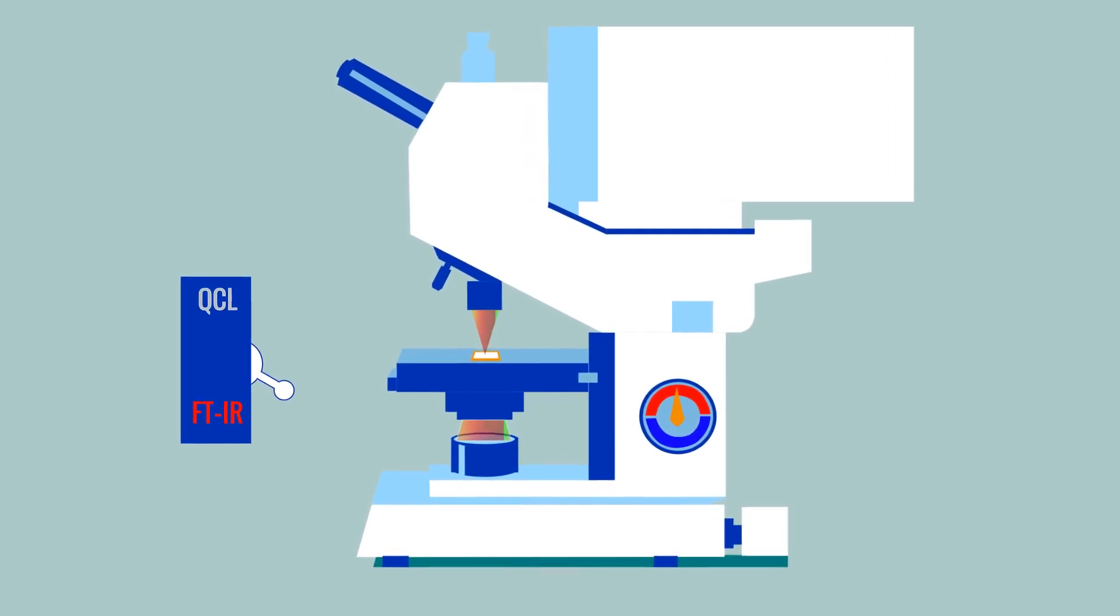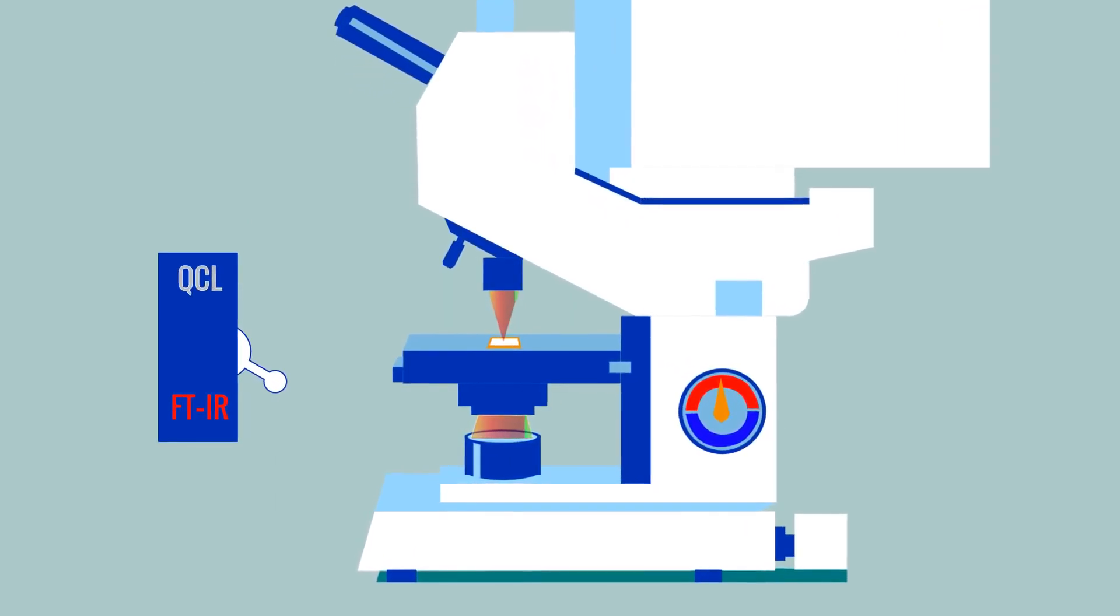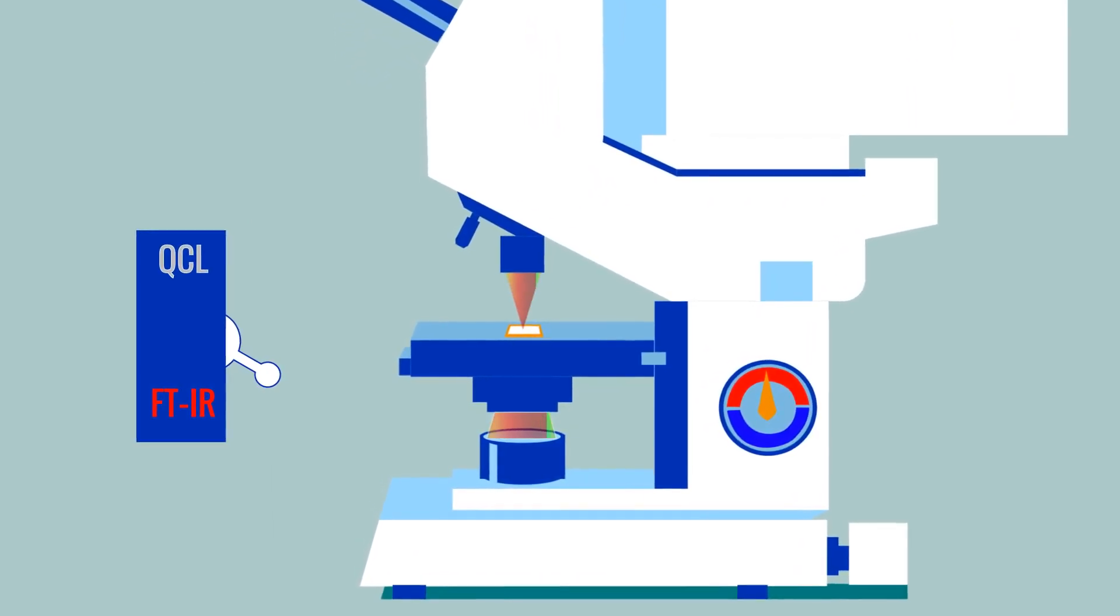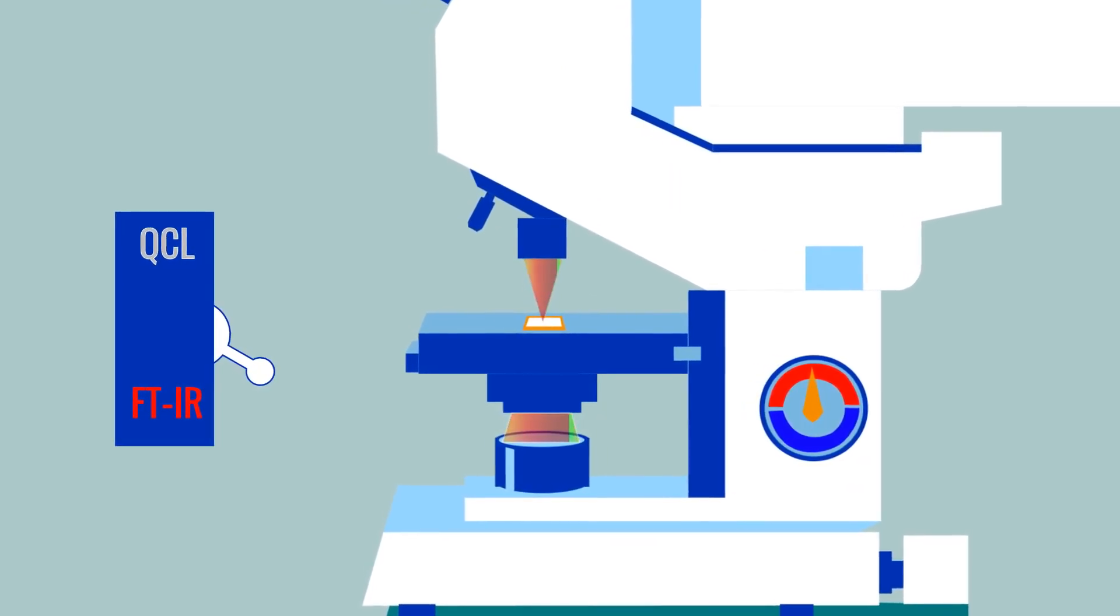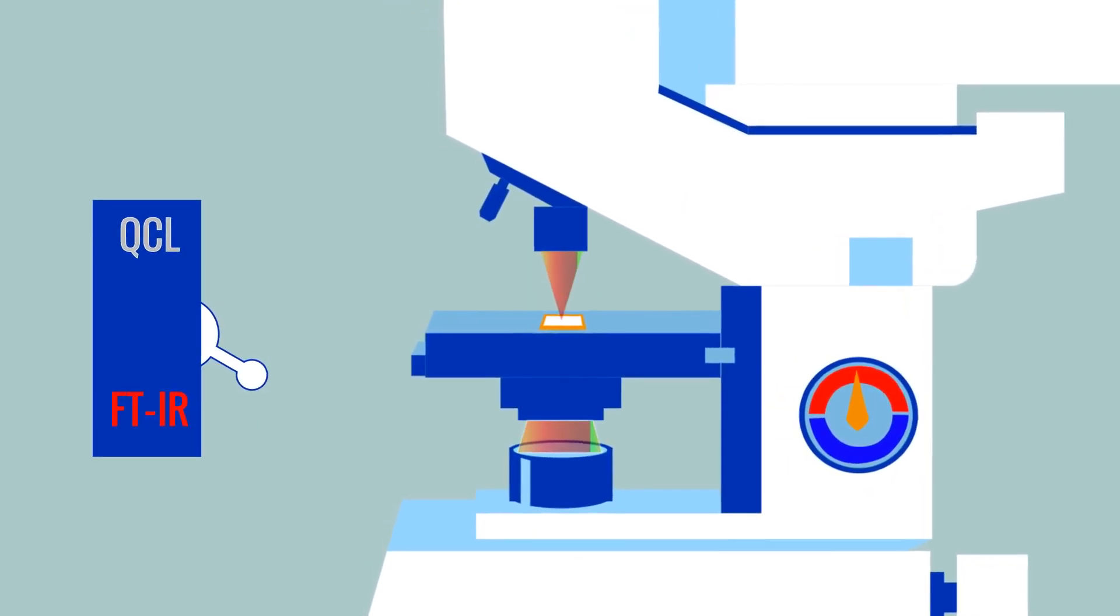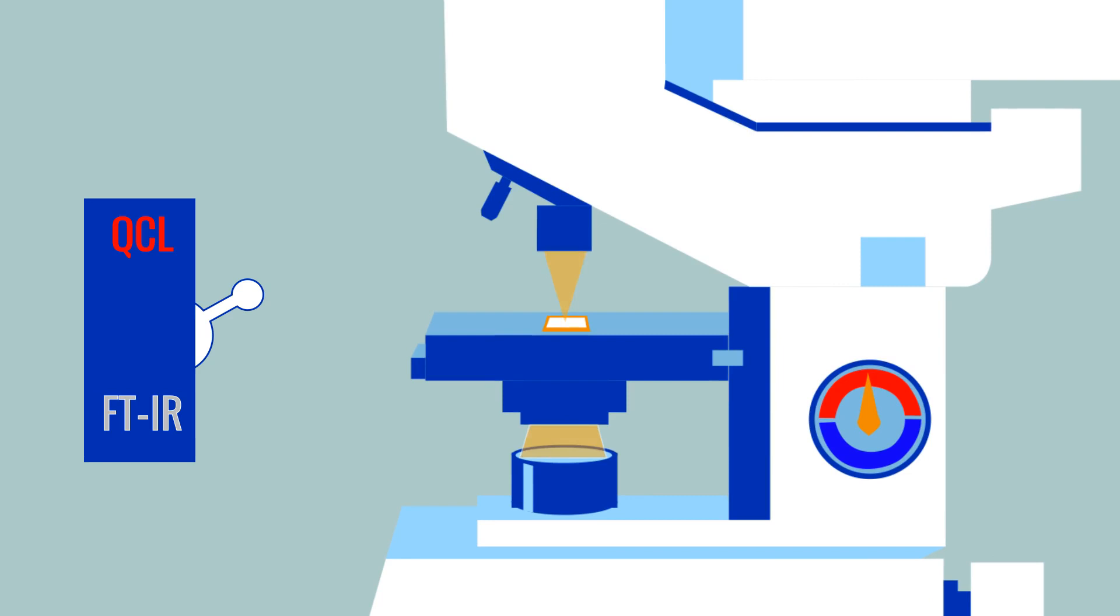QCL microscopy is tightly linked to classic IR and FTIR spectroscopy. While FTIR spectroscopy observes all wavelengths in the infrared range simultaneously, QCL spectroscopy can select individual wavelengths to solve defined problems much more efficiently.